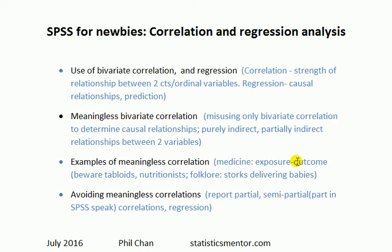Another example from nutritionist tabloid headlines: there is a claim that the more olive oil you consume, the less your skin wrinkles — i.e., there is a negative correlation between consumption of olive oil and skin wrinkling. Does that mean you should consume gallons of olive oil to get nice skin? No, because this is also a meaningless correlation. There are other variables related to both olive oil consumption and skin wrinkling — for example, social class, sun exposure, and stress levels.